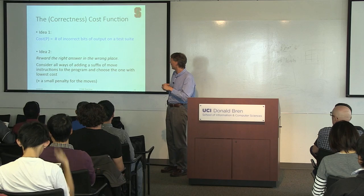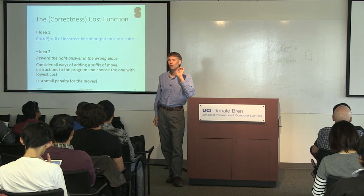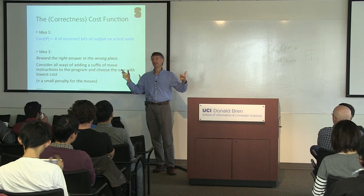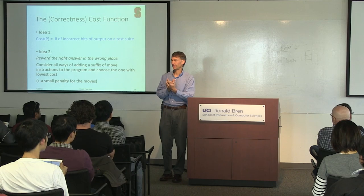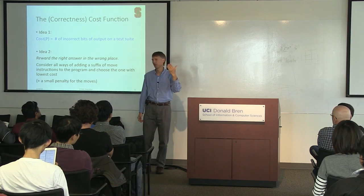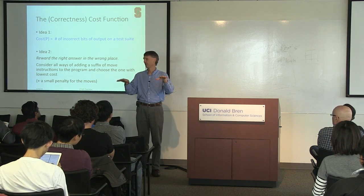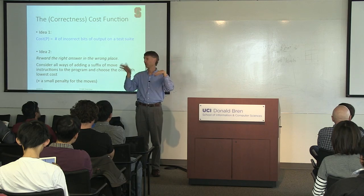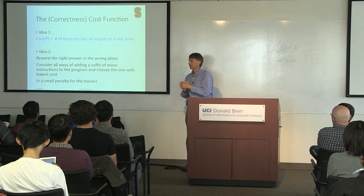A slight improvement: reward getting the right answer in the wrong place. If you produce the right answer in register five but I wanted it in register one, you should get almost full credit because you're just one move instruction away. This gives a vast improvement: with 16 registers, every time you make a change you've got 16 shots at getting the right answer. If you ever happen to tweak some subgraph so it produces the right output in the wrong register, you're almost there — that gives roughly an order of magnitude improvement.